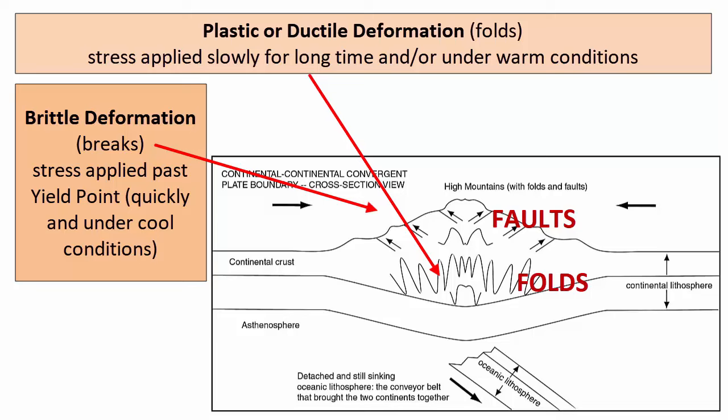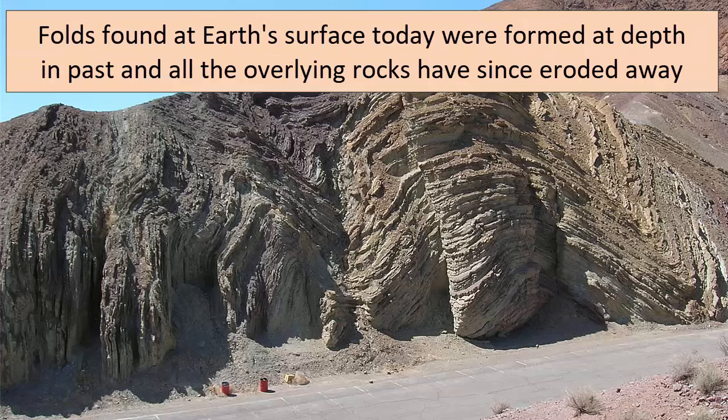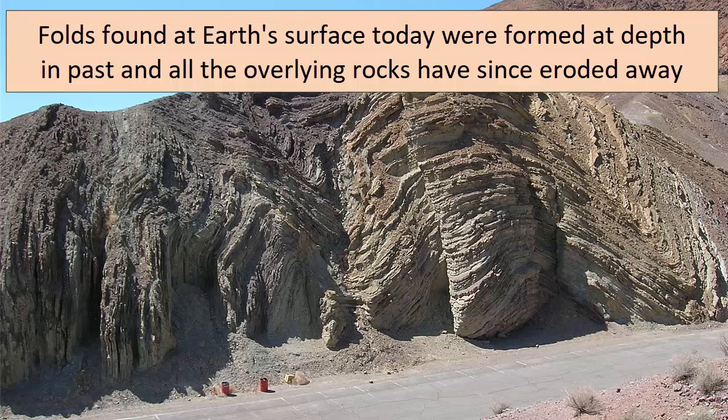Note, if folds happen at depth, but we see those folded rocks at the surface, what does that mean? It means that all the rocks that were above the fold when it was forming have now been eroded away, the land is uplifted, and the older folded rocks are now exposed. We will come back to the topic of mountain building and erosion in later video tutorials.